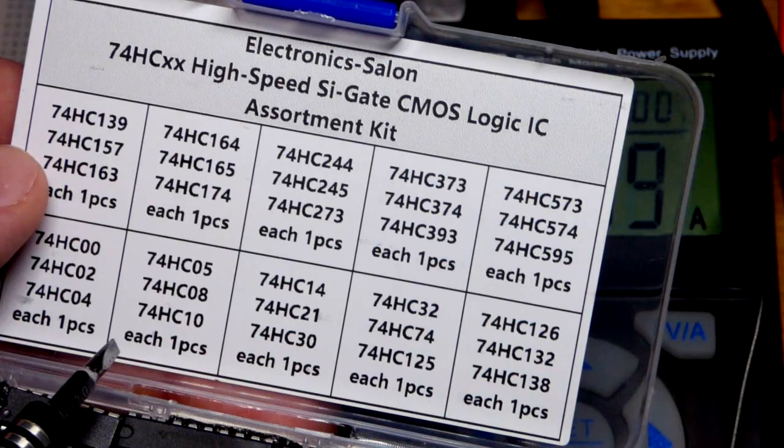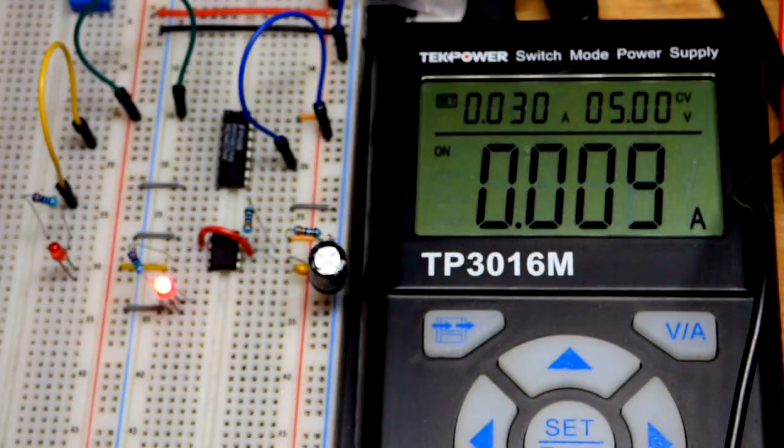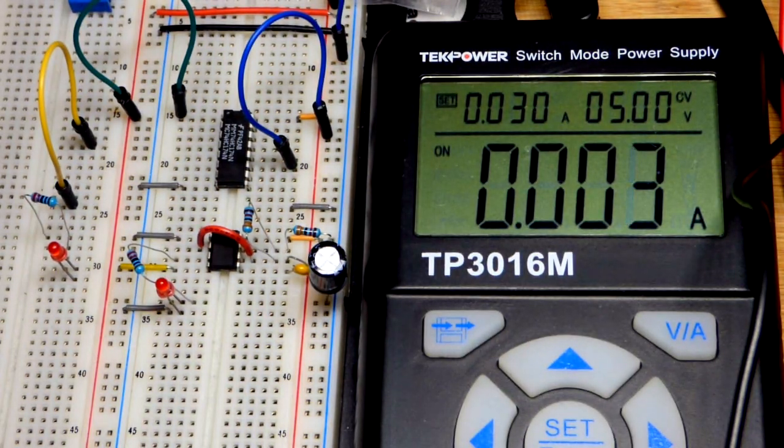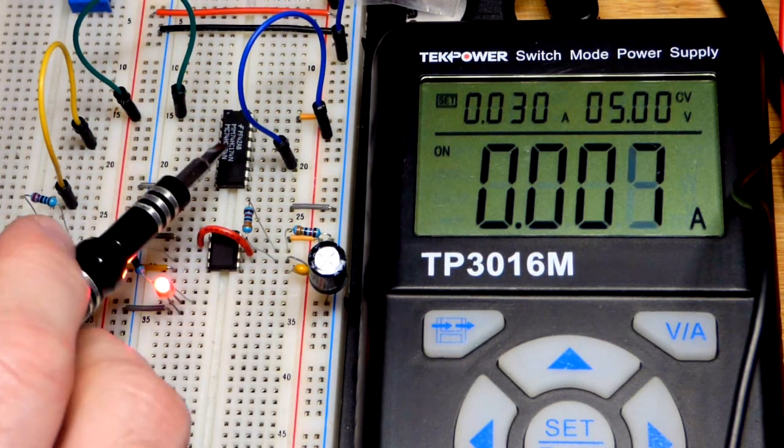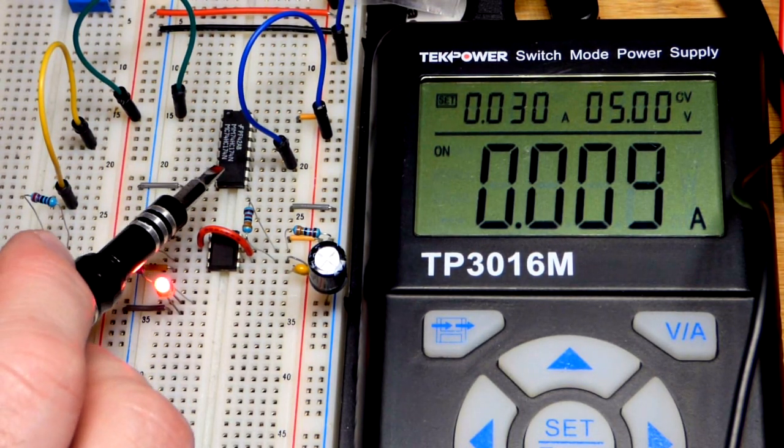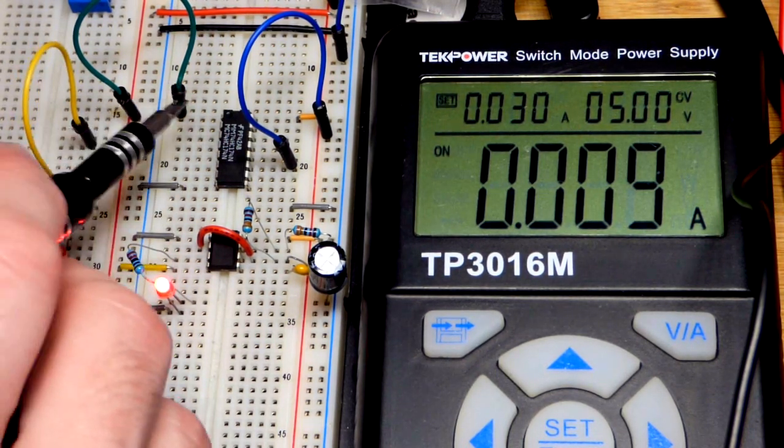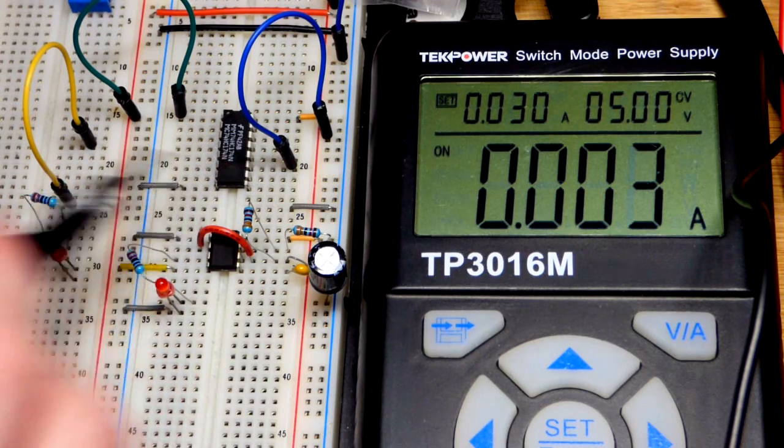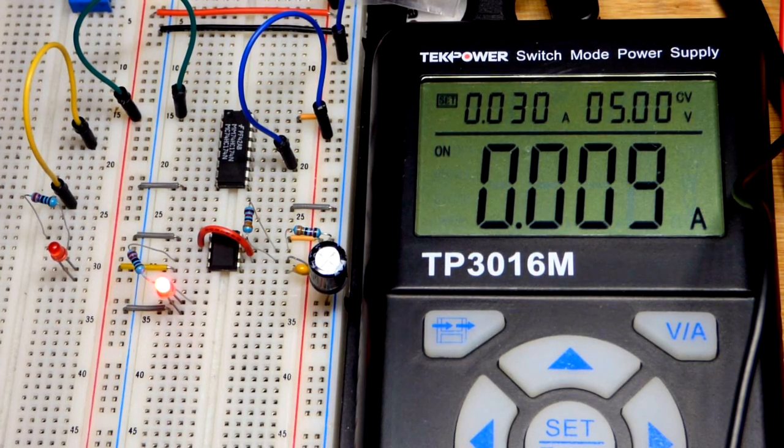It is a hex, so there's six D-type flip-flops with clear. There's the clear pin there. There are six flip-flops but we're only going to look at one.